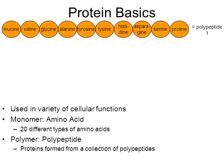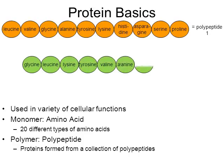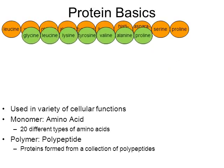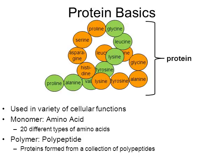Proteins are going to be formed from a collection of polypeptides. Here in green is another polypeptide, a little smaller — only made from 7 amino acids. These two polypeptides will bond together, and then they're going to twist and fold themselves into a very specific shape. Only then do we call that overall molecule a protein. Proteins can be made from one, two, three, or four polypeptides, so proteins can be rather large.